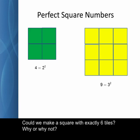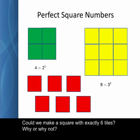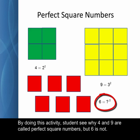Could we make a square with exactly 6 tiles? Why or why not? By doing this activity, students see why 4 and 9 are called perfect square numbers, but 6 is not.